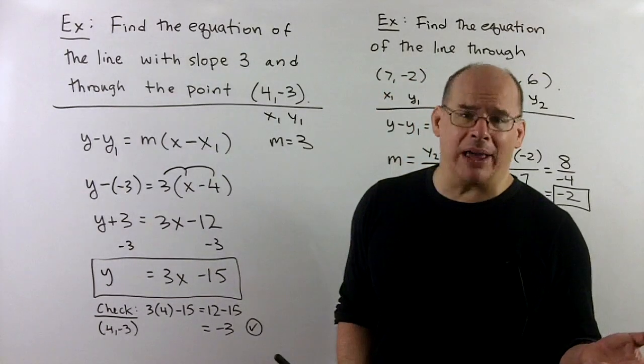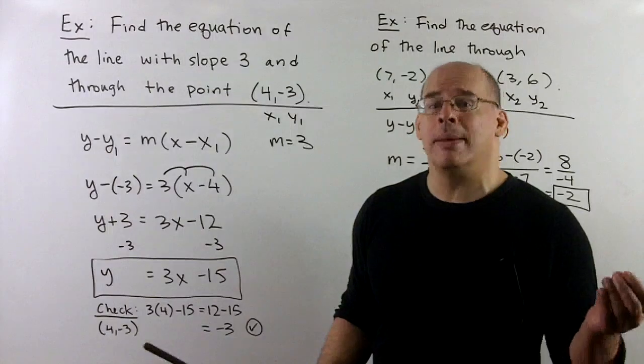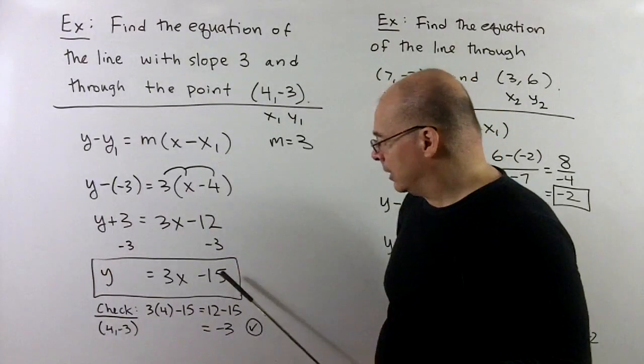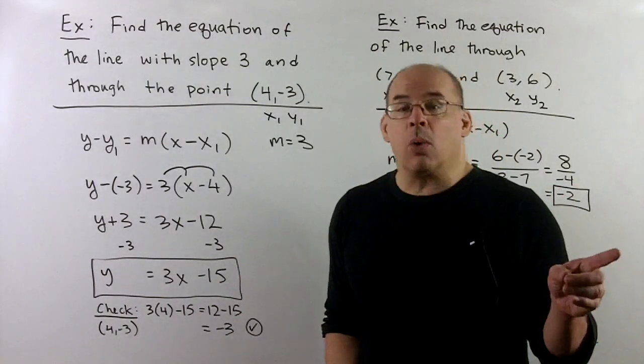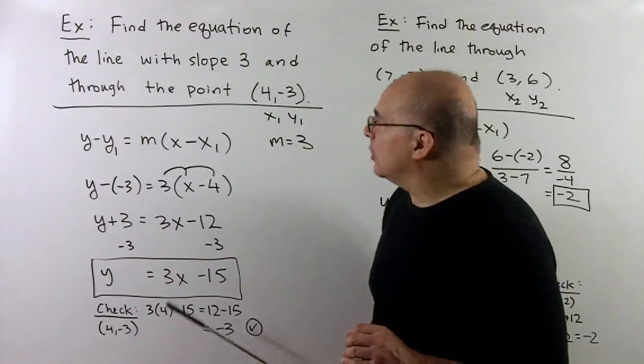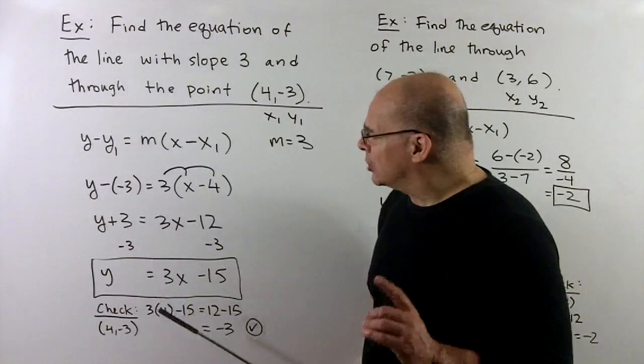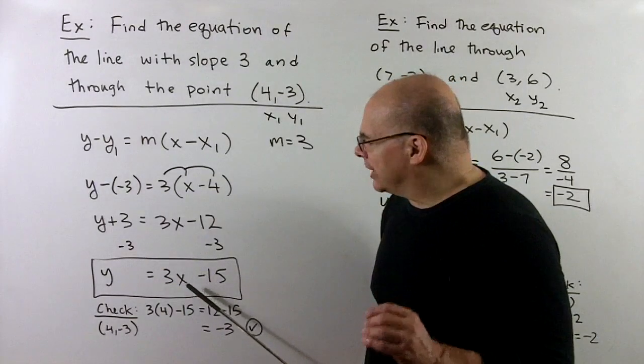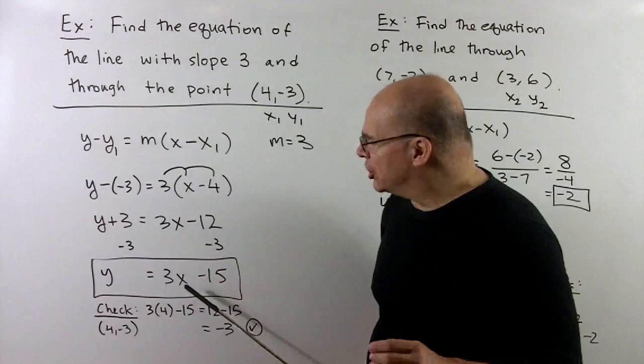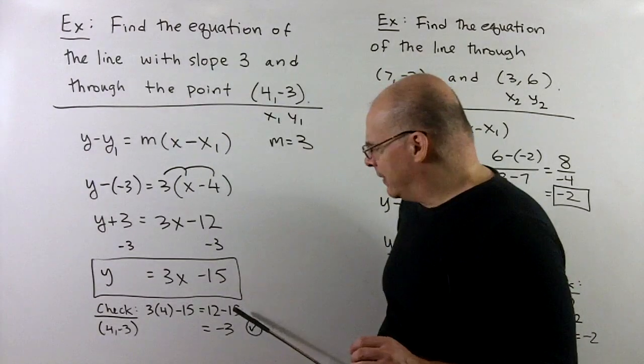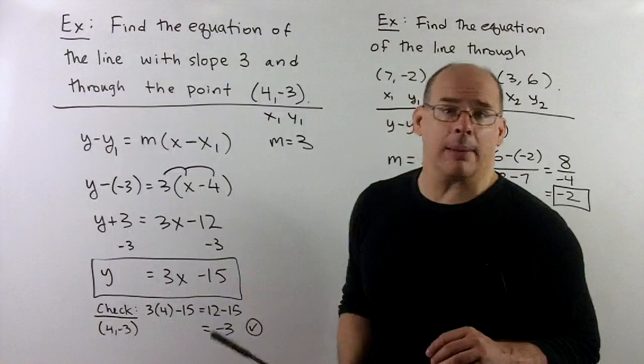So for instance, now I know what the y-intercept is, it's (0, -15). We can check our work. This is a light check. What I can do is, I know I have the point (4, -3) on the line, so if I put 4 in for x, we should get minus 3 out. And so when I check, I get 12 minus 15 is in fact minus 3 as promised.